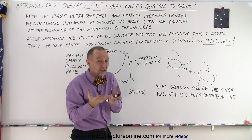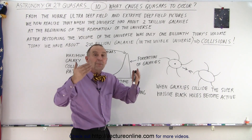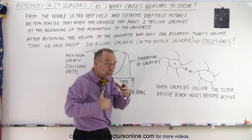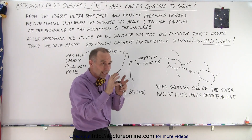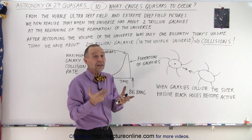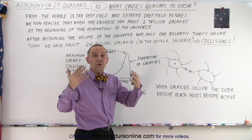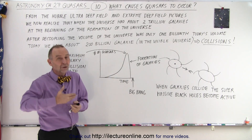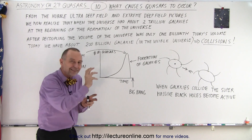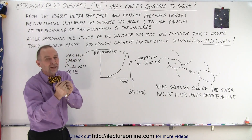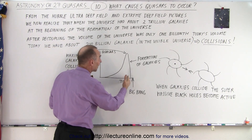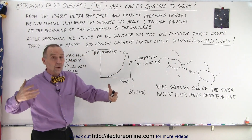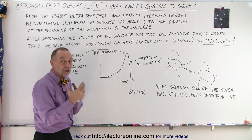Quasars are really galaxies in the process of colliding. It was difficult to see the host galaxy because of the glare from the active black hole, but with special techniques we've been able to extract that light. Whenever we looked at a quasar, we could see two galaxies in the process of colliding. This means that at the very beginning, galaxy collisions were very common. Whenever collisions happened between two galaxies and one or both had a black hole, that activity created a quasar.